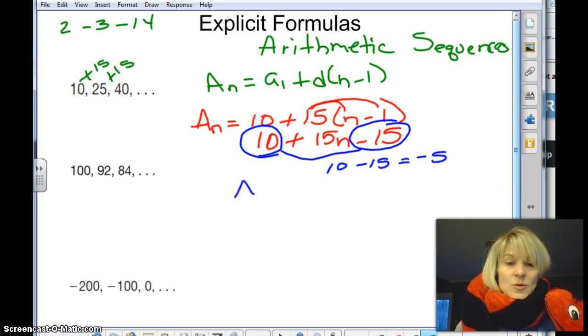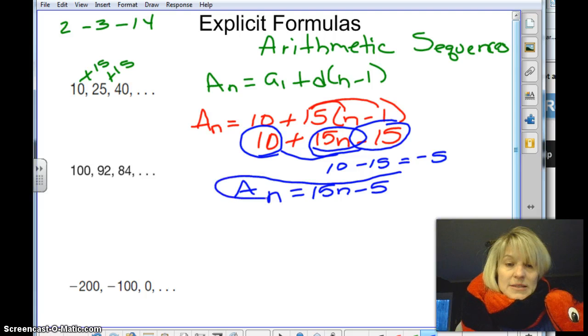So I'm going to write this equation as a sub n equals, I have my 15n here. There were no like terms for that. And then I have minus 5. And then this is the explicit formula for that sequence.